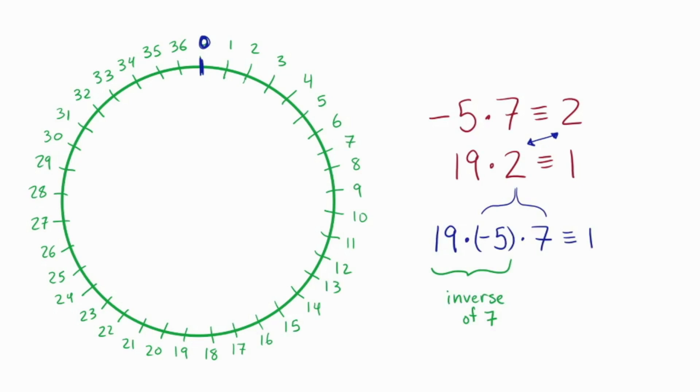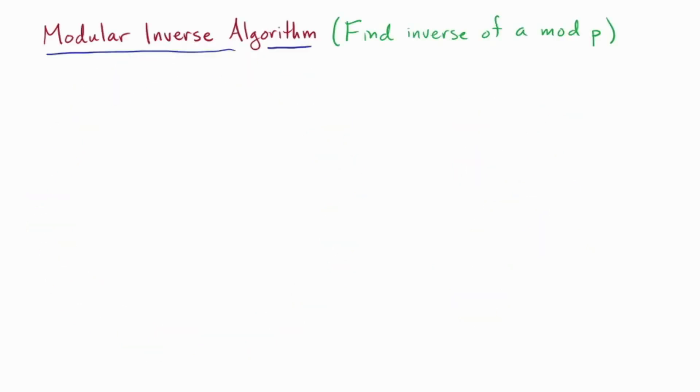So now I go back and use this together with my expression for 2 as a multiple of 7 to find the inverse of 7. Okay, so there we go. That's the whole idea. Let's formalize this a little bit.